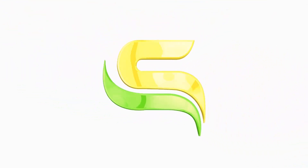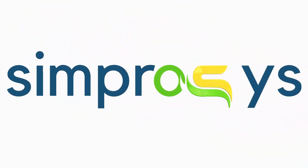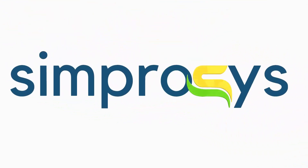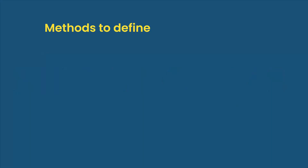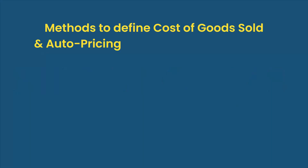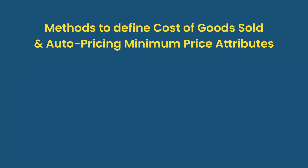Hello friends, welcome to the help videos of the Simprosis Google Shopping Feed app. In this video, we'll show you how to define values for cost of goods sold and auto pricing minimum price attributes.